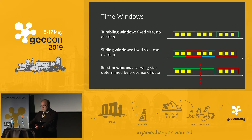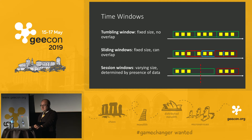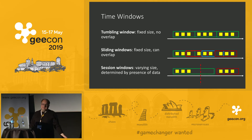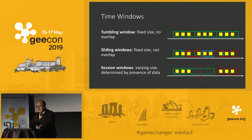Finally, session windows — also mentioned during the Beam talk — are windows that vary in size. They start when data arrives and end if there is no data for a determined period. For example, a session window with a lag of five seconds: if no data arrives for five seconds, the window ends and a new one opens when data resumes. Session windows are typically used for clickstream monitoring or activity monitoring, and even the duration of the window itself gives you useful information.